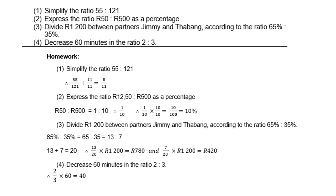It's just one of many ways to simplify the ratio. Number 2: Express R50 is to R500 as a percentage. So R50 is to R500, if you simplify, it's same as 1 is to 10, which is 1 over 10 times 10 over 10 to give you 10 over 100. So therefore, 10%.